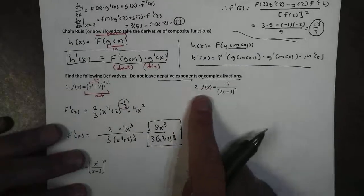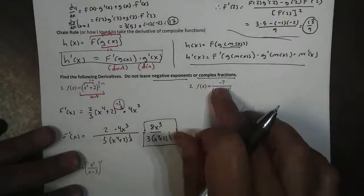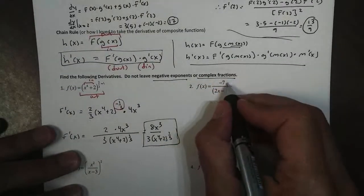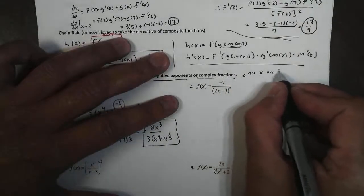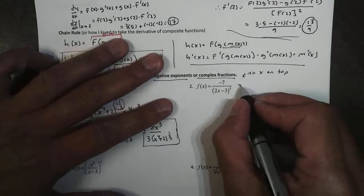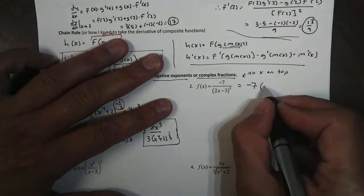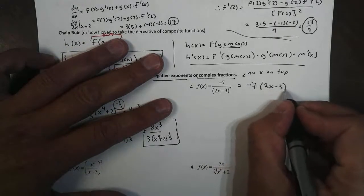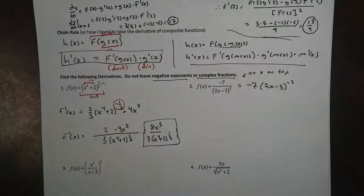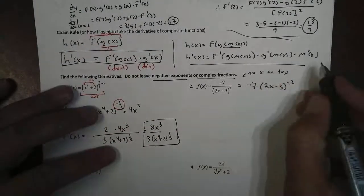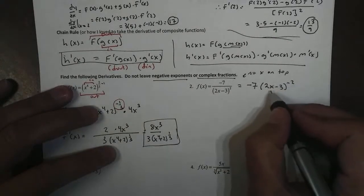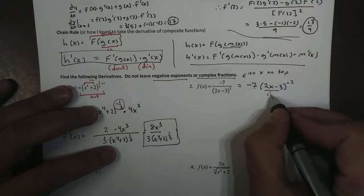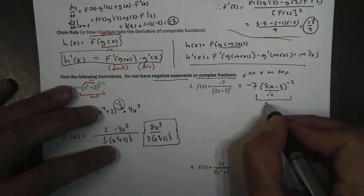Now number two, you could do quotient rule on this one. But because there's no x on top, if there's no x on top, I am going to rewrite this. Negative seven. This becomes (2x - 3)^(-2). If there's no x on top, I could just bring that x up. And now I just have it, basically, it's a power rule. Or in this case, a chain rule, because I do have an inside function. And there is my outside function.